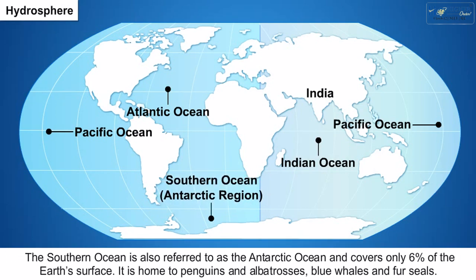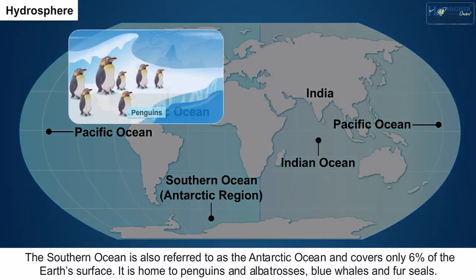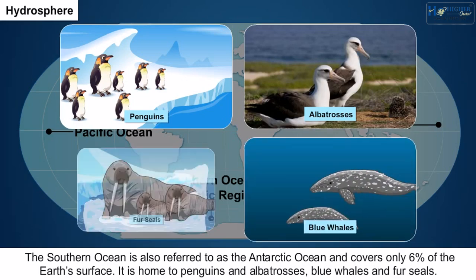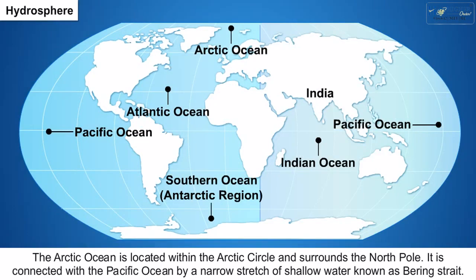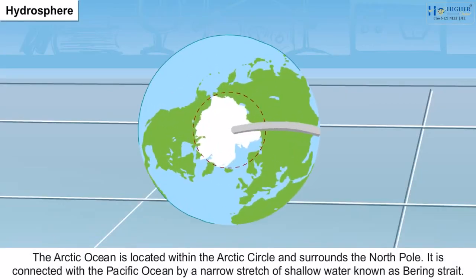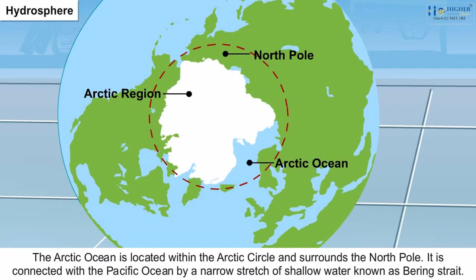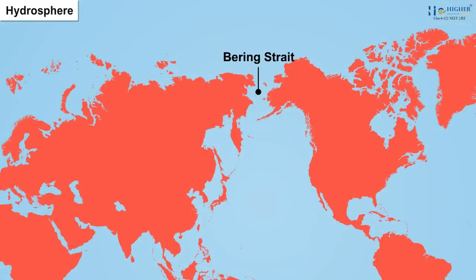4. The Southern Ocean is also referred to as the Antarctic Ocean and covers only 6% of the Earth's surface. It is home to penguins, albatrosses, blue whales and fur seals. 5. The Arctic Ocean is located within the Arctic Circle and surrounds the North Pole. It is connected with the Pacific Ocean by a narrow stretch of shallow water known as the Bering Strait.